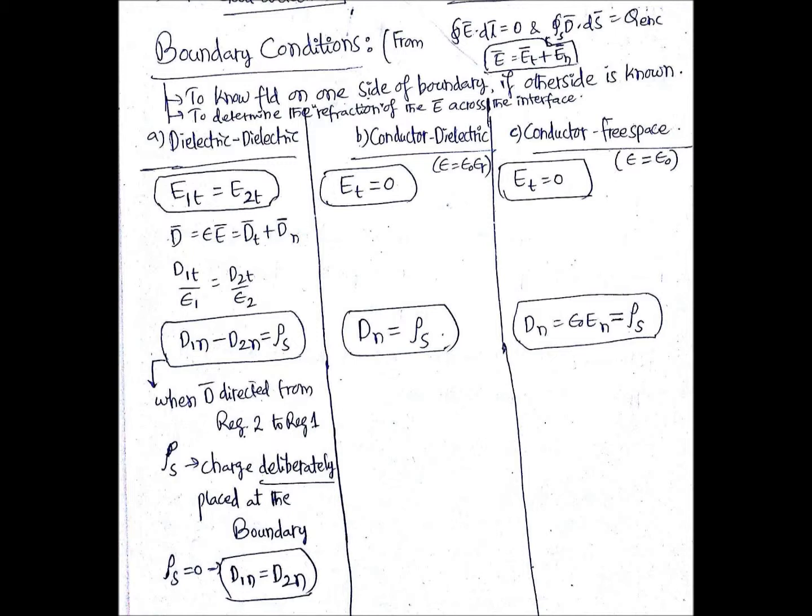The total electric field intensity is given by the electric field intensity tangential plus electric field intensity normal. This is very important — total equals tangential plus normal. Now, looking at the first case: dielectric-dielectric boundary, the tangential components relation.